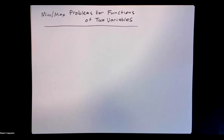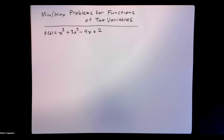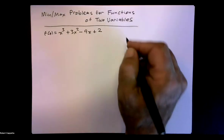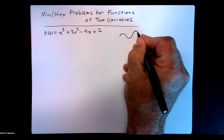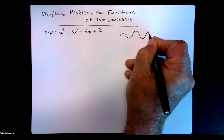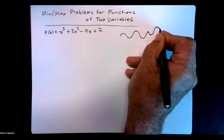We're going to look at min-max problems for functions of two variables. But before we get into those, let's remind ourselves of the process for a function of one variable. So here's such a function, and if I wanted to identify mins and maxes, my first strategy is to look at places that are possible mins or maxes. So if we look at a graph, what are some places where we could have a min or a max?